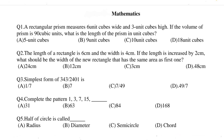Now let's start with the worksheet. Question 1: a rectangular prism measures 6 unit cube wide and 3 unit cube high. If the volume is 90 cubic units, what is the length of the prism in unit cube? The correct answer is option A, which is 5 unit cube.